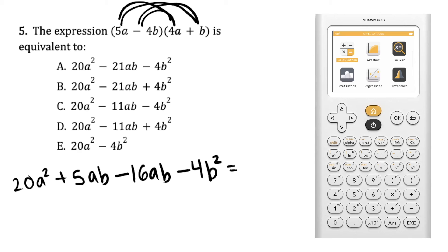Combining our like terms here, the middle terms, we now have 20a squared minus 11ab minus 4b squared, which as you can see is our answer choice here, C.